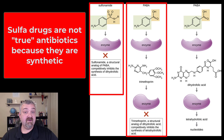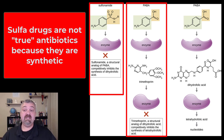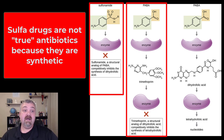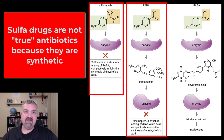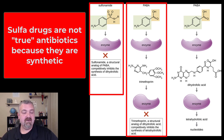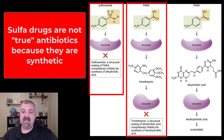The sulfa drugs have been around a very long time, since the early 1930s. These were actually commercially used synthetic antibacterial agents — not antibiotics, because antibiotics technically have to be a natural thing produced by microbes — but they've been around and in use longer than even penicillin, which we say is the first antibiotic.